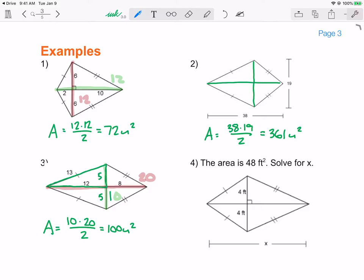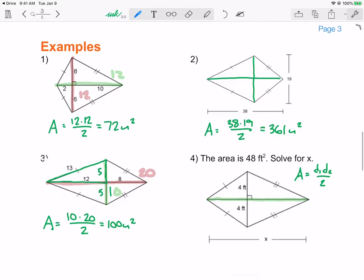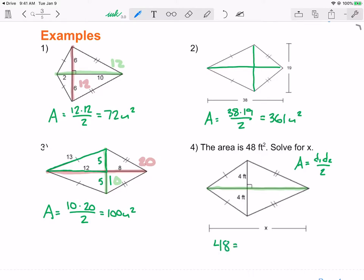Now, the next one is actually asking me to work backwards. It says the area is 48 feet squared. Solve for x. Well, it looks like x is this entire length right here, which is one of my diagonals. I have to recognize what kind of shape this is. This is a kite. So I know a kite has the formula d1 d2 over 2. Well, I've got one of my diagonals. It's going to be the 4 plus the 4, which is 8. And I know my area. So I'm going to write my area is 48. I know one of the diagonals is 8. I don't know the other diagonal, and I have to divide that result by 2. Well, I can multiply both sides by 2. That gives me 96 equals 8 times d2. So if I divide by 8, I get that d2, the other diagonal, which is x, is equal to 12 feet.